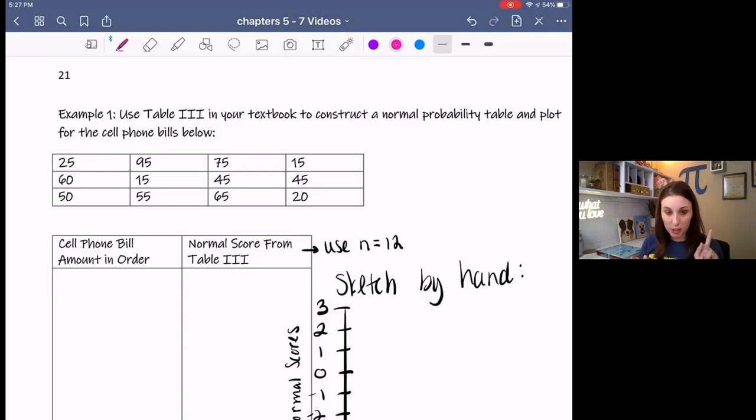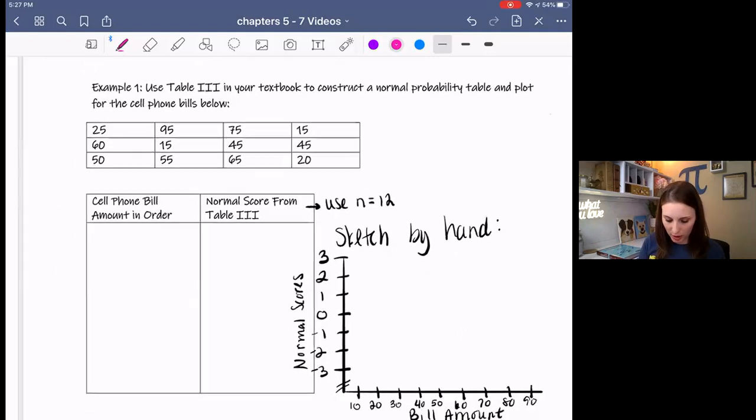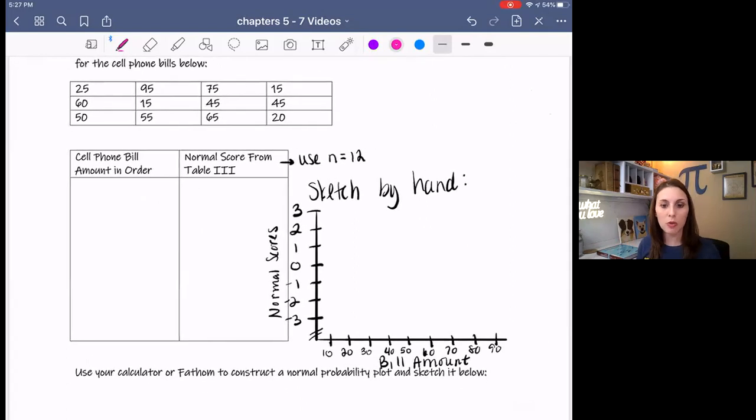They're just saying for a sample size of this size, N equals 12, these are the approximations for the Z scores you would get for these values based on a normal population. So what you have to do is first put your data in order from smallest to largest. And then I'll show you the next step. So go ahead and pause it, put your data in order in this table and then come back.